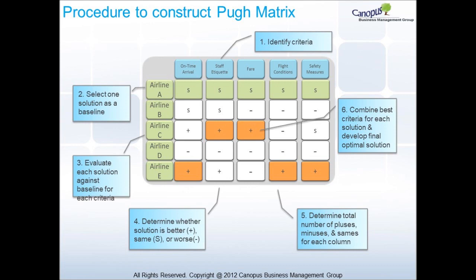Determine whether a solution is better, same, or worse. Determine the total number of pluses, minuses, and sames for each column. Combine the best criteria for each solution and develop the final optimal solution.